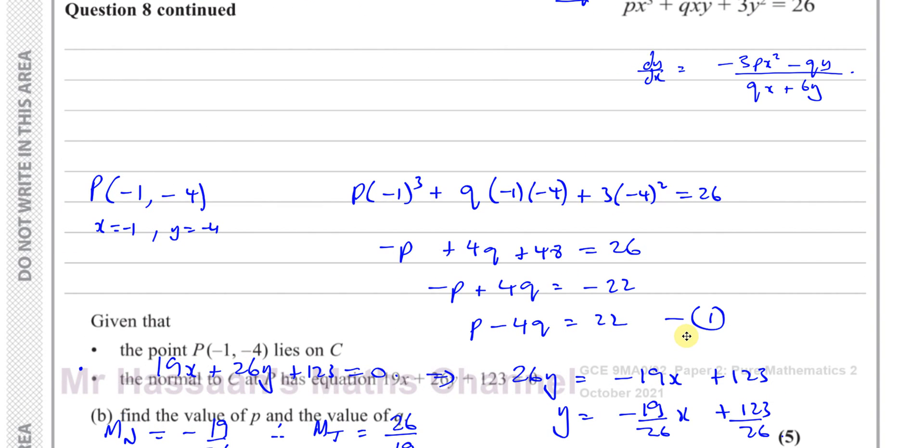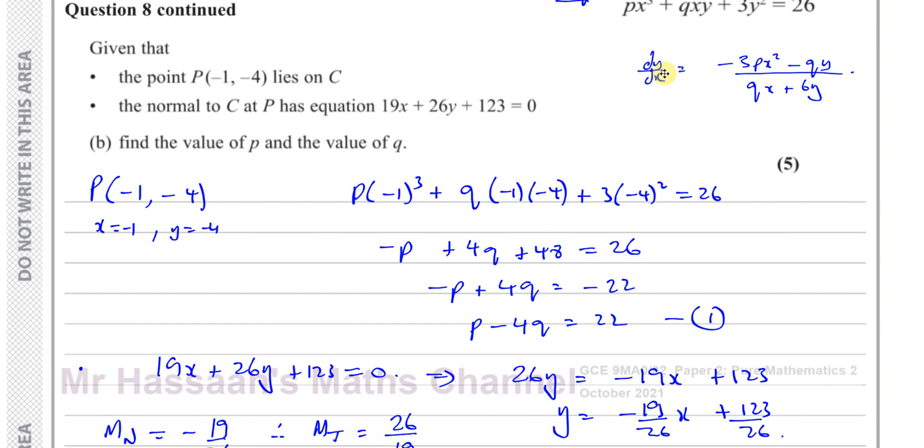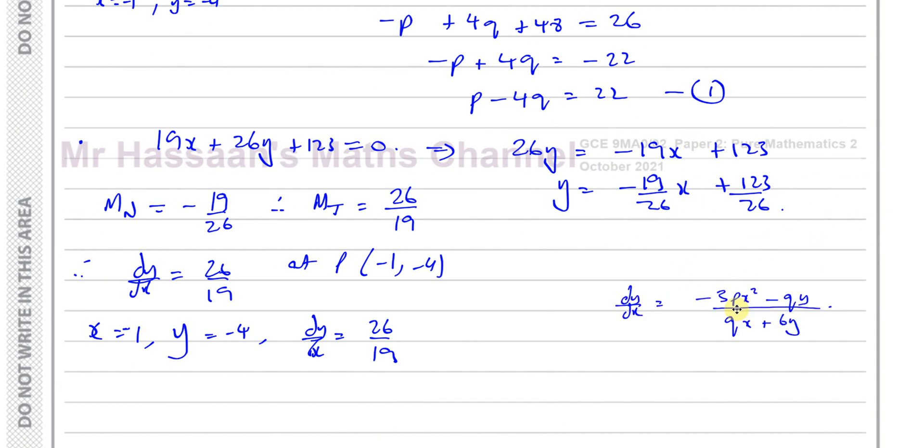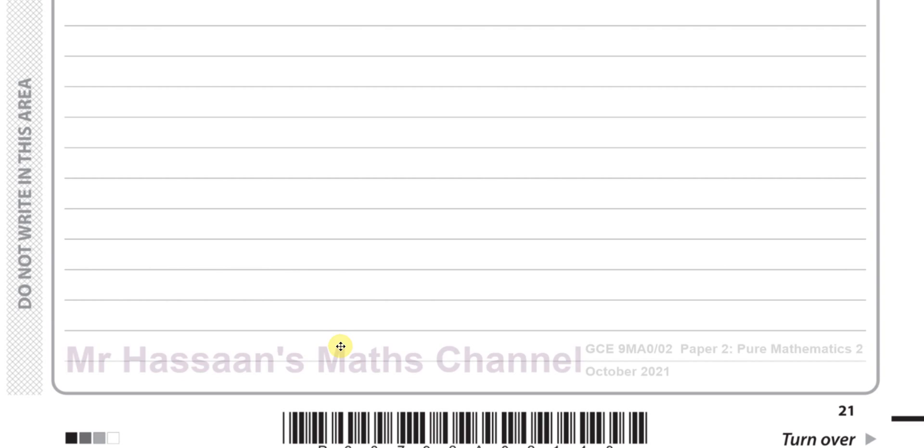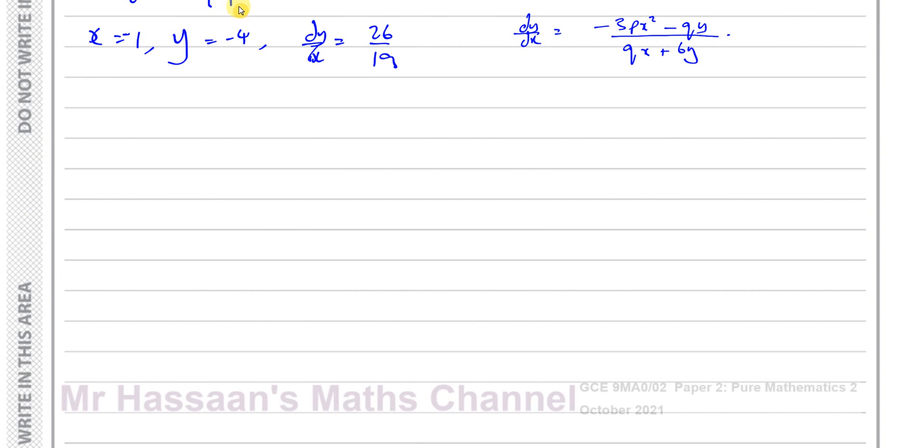So we take our expression for dy/dx. I'll just bring it down now. That's our expression for dy/dx. Okay, and I know that for this expression, when x equals -1 and y equals -4, this must equal 26/19. So you have -3p times (-1)² - q times -4 divided by q times -1 plus 6 times -4. That's 3p times -4. That's 3p - 3p. Forgot the p there, yeah? And that's equal to 26/19.